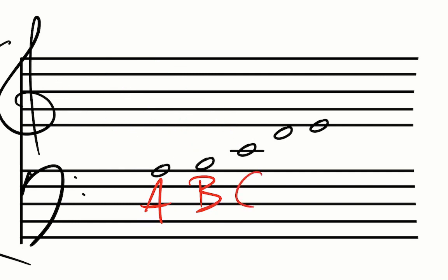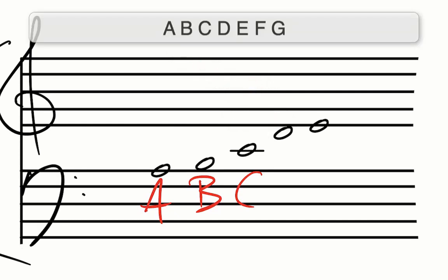This bottom line of the treble clef staff is an E. This space is right below that E. So what is right before E in the alphabet? It's tricky to go backwards, but before E in the alphabet is D. So it's D.